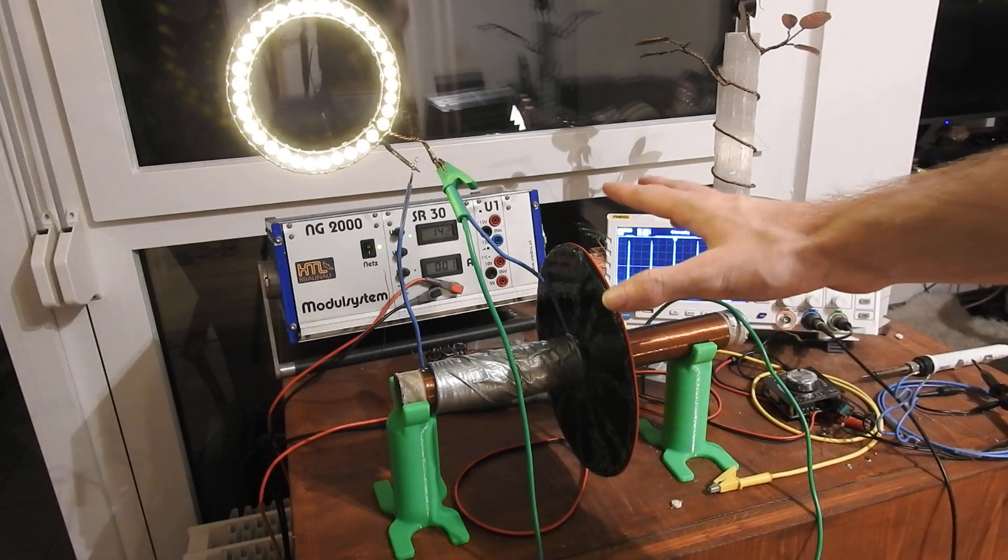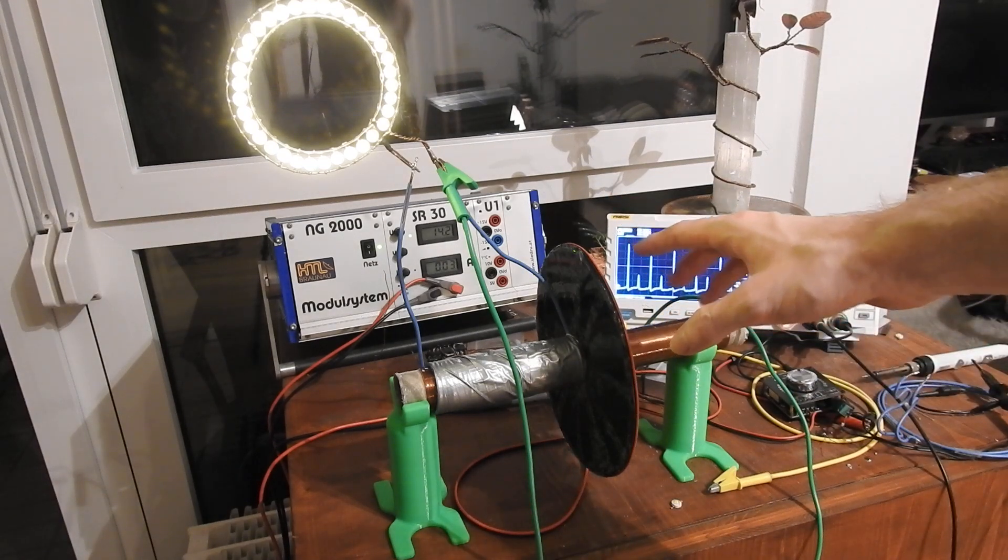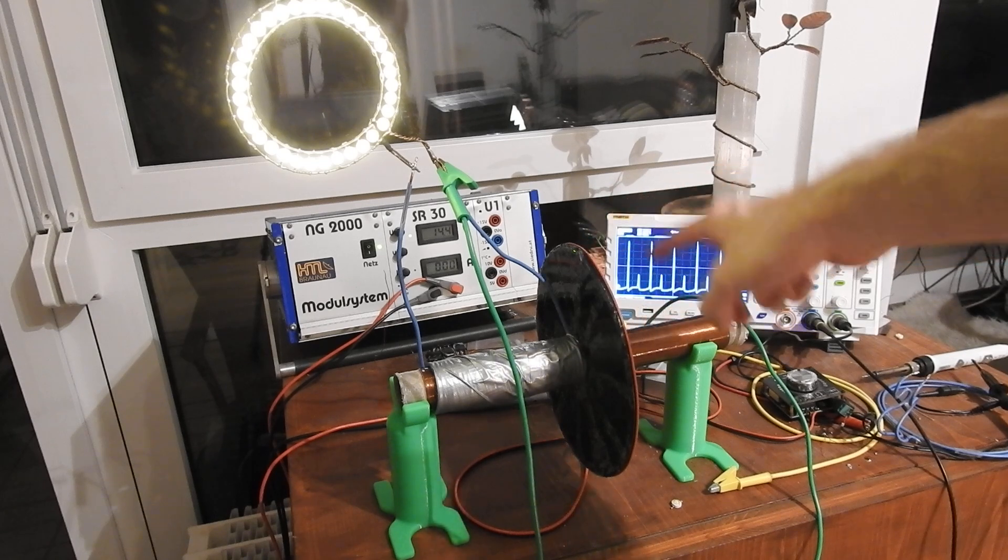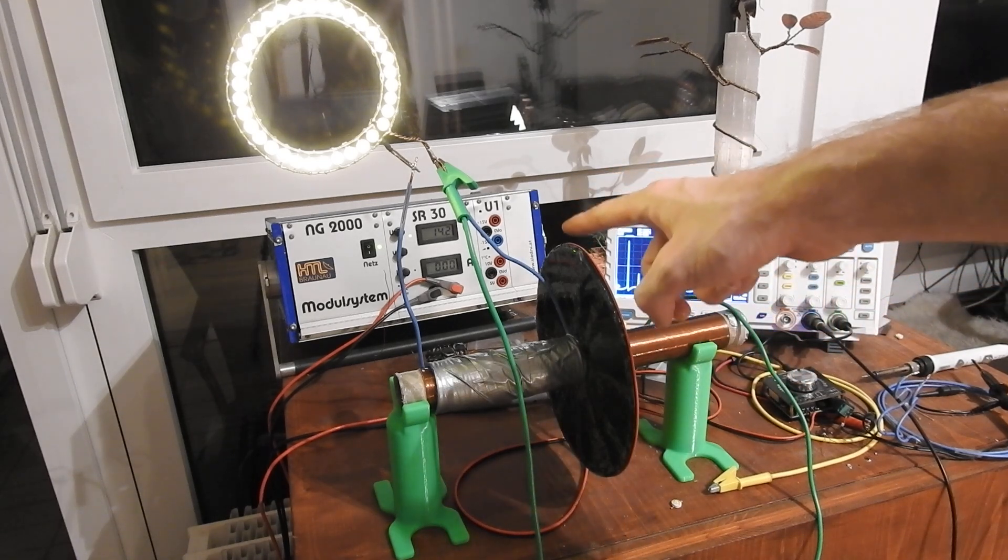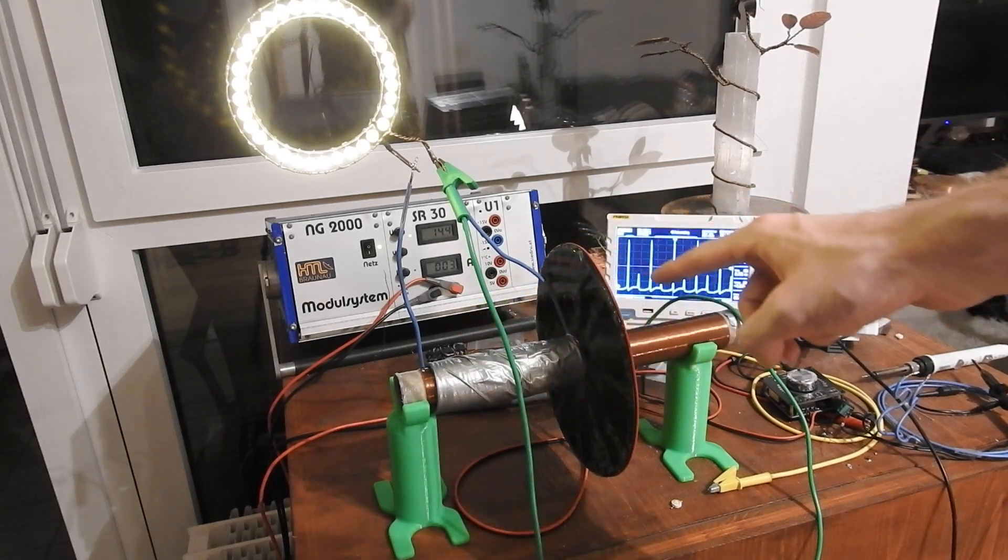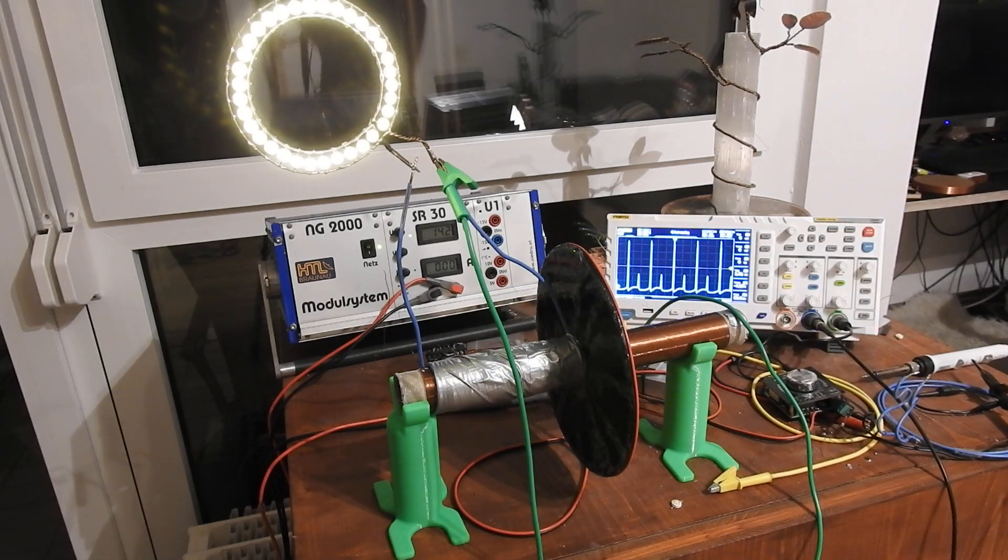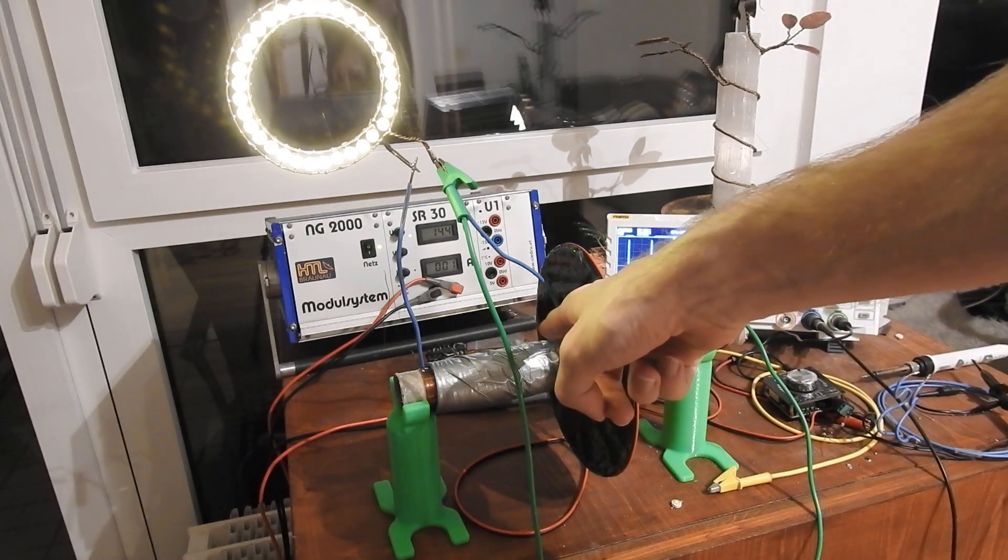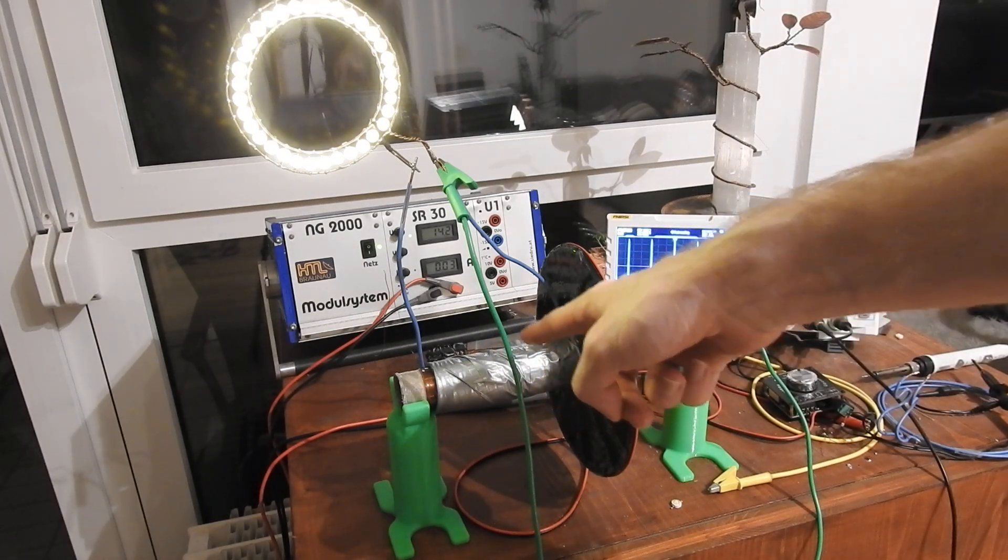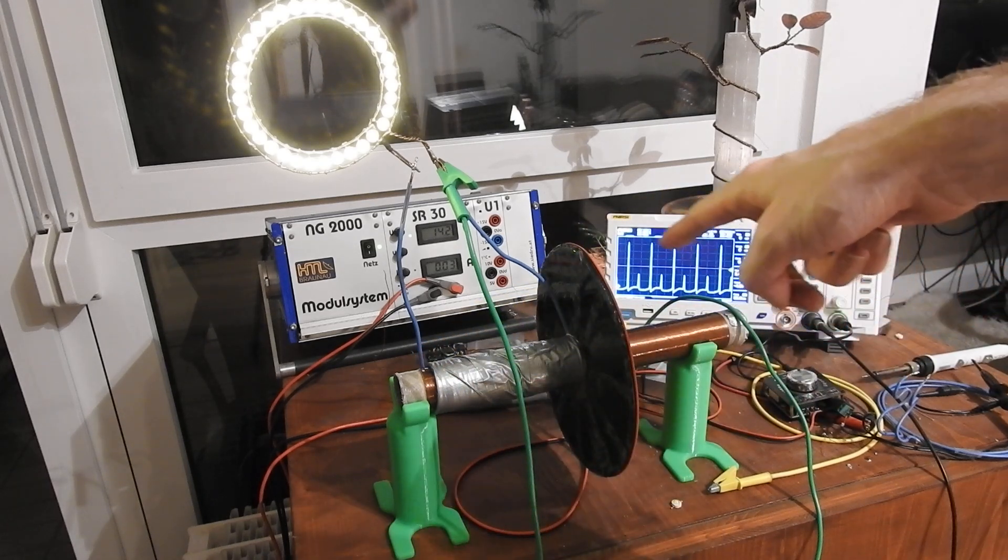In the last video I showed you the base principle of this setup with a bifilar coil and a cylindrical coil that get pulsed at the resonance frequency of the coil. And what I've done here is I've added another coil, a cylindrical coil, on top of the longer cylindrical coil.